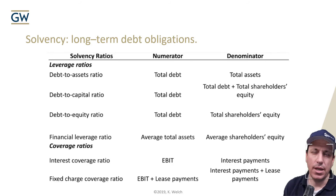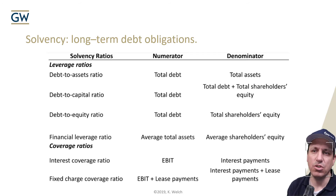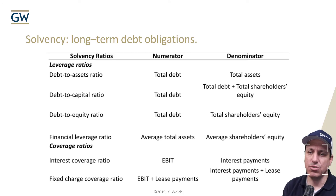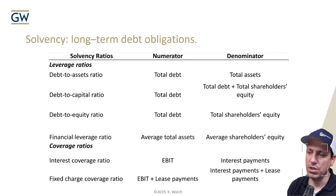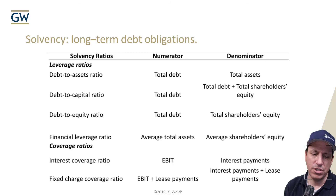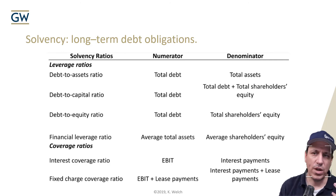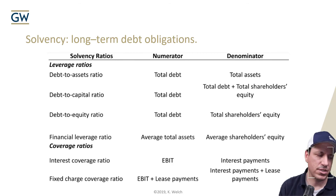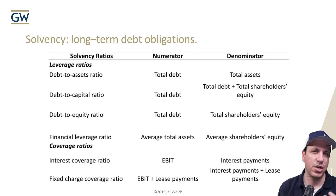For coverage ratios: the interest coverage ratio is EBIT over interest payments. The fixed charge coverage ratio is EBIT plus lease payments over lease payments plus interest payments. I wouldn't spend a lot of time memorizing these formulas. What matters is understanding what's in the numerator and denominator, and what would change given an impairment or revaluation of an asset.